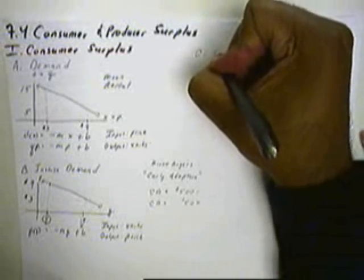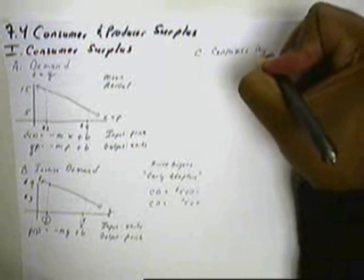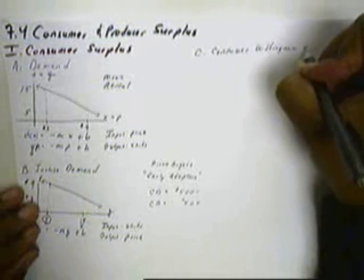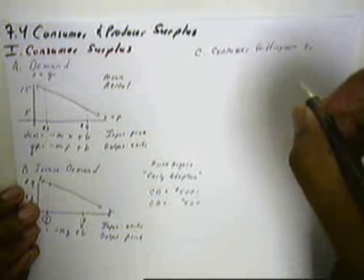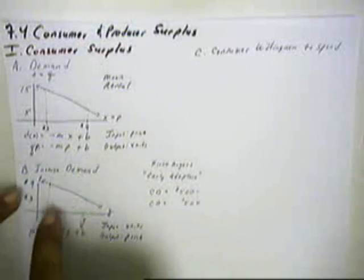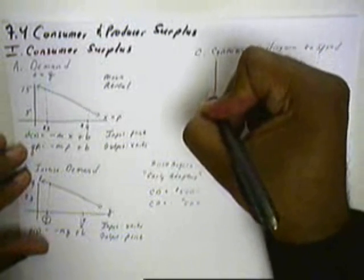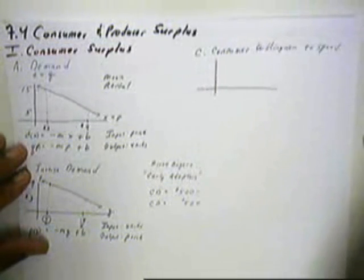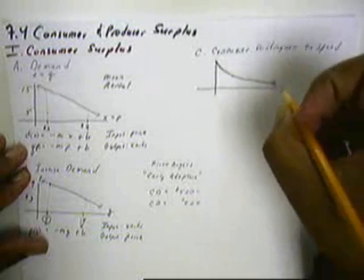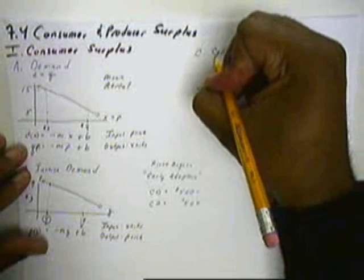Now let's look at Consumer Willingness, their willingness to spend. We're going to look at the inverse demand function and put a little curve on it to make it easier to work with. This is Q and the output is P.